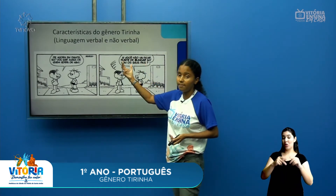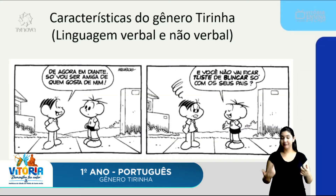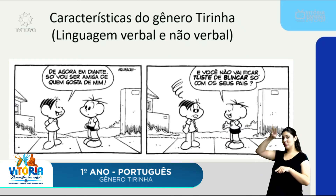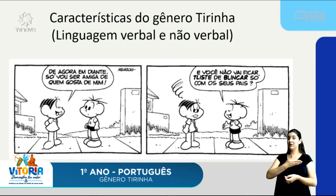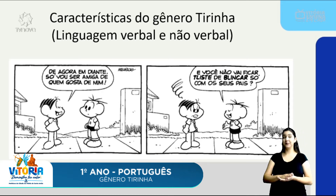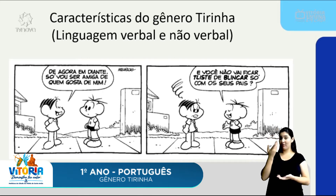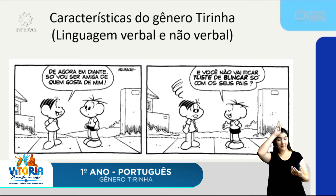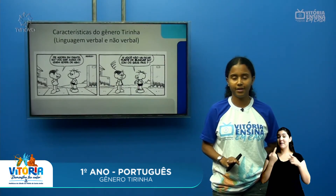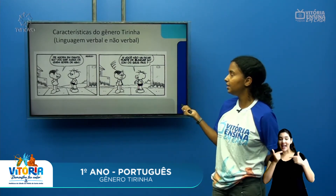Exemplificando a linguagem verbal e não verbal, temos outra tirinha com a Mônica e o Cebolinha. No primeiro quadrinho, a Mônica diz: 'De agora em diante, só vou ser amiga de quem gosta de mim.' O Cebolinha estava olhando pra ela com cara de quem prestava atenção. No segundo quadrinho, o Cebolinha responde: 'E você não vai ficar triste de brincar só com seus pais?' O Cebolinha foi irônico, insinuando que ninguém gosta da Mônica e que a consequência seria ela brincar só com o pai e a mãe. Esse fato torna a tirinha engraçada.